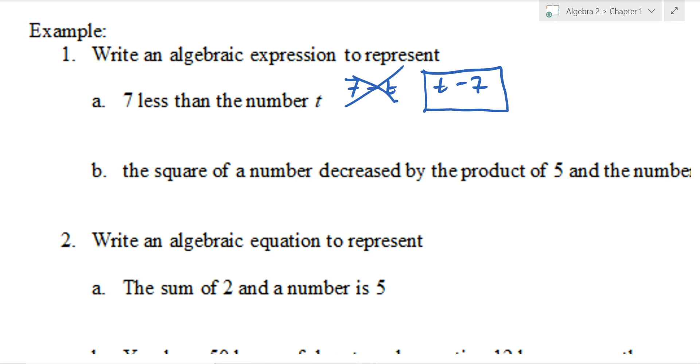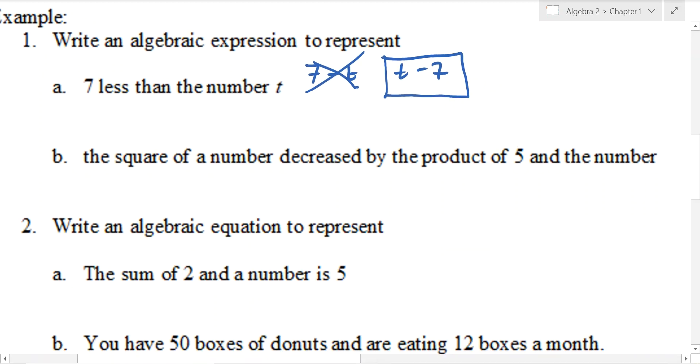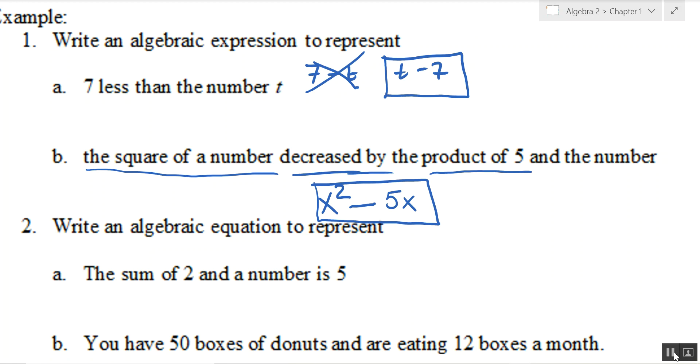Next one says the square of a number decreased by the product of 5 and the number. Product means I'm going to multiply 5 and the number which we called x. And there's our expression. All right, let's go ahead and pause it, see if you can do these next two. Take a minute and see if you can do question 2, A and B.